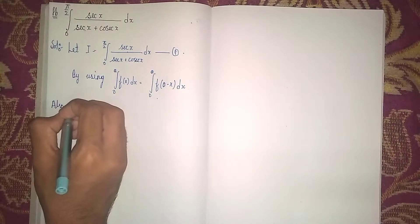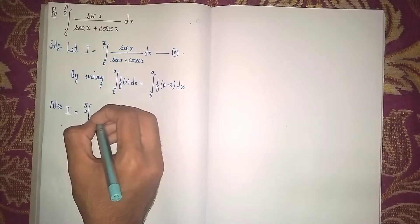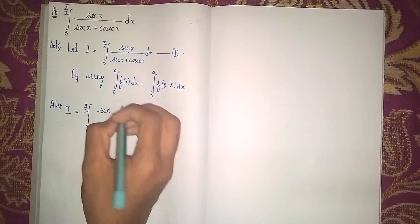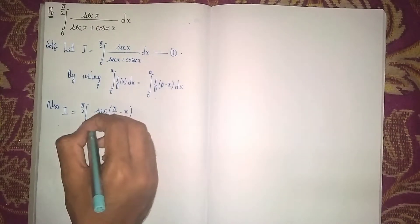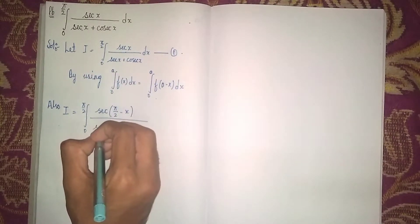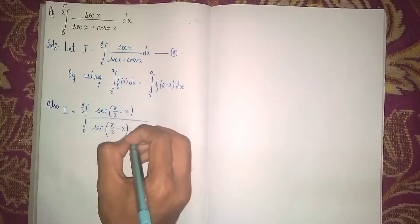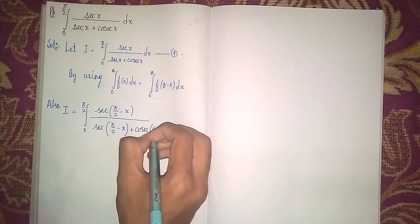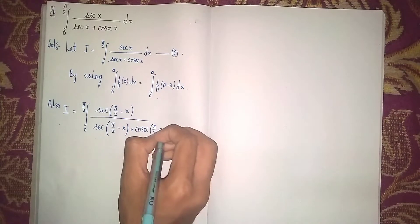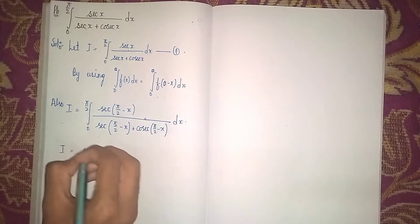Applying the property, I equals the integral from 0 to π/2 of sec(π/2 minus x) divided by [sec(π/2 minus x) plus csc(π/2 minus x)] dx.